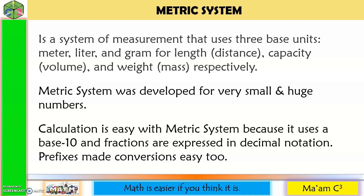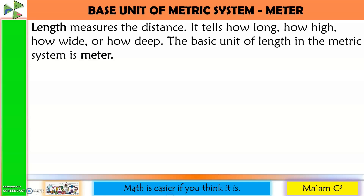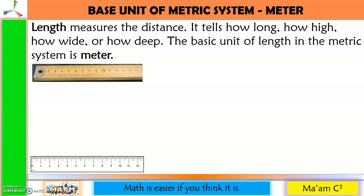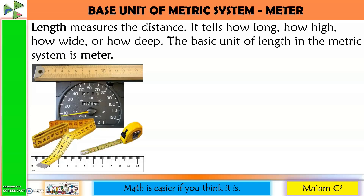Prefixes make conversions easy too. The first base unit is meter. It is the basic unit of length in the metric system. Length measures the distance — it tells how long, how high, how wide, or how deep. Here are some instruments used in measuring length: a ruler for 12 inches and shorter lengths; a meter stick for longer lengths, like measuring the floor of your house; a measuring tape used by dressmakers; a tape measure commonly used in construction; and an odometer, which measures the distance traveled by vehicles.